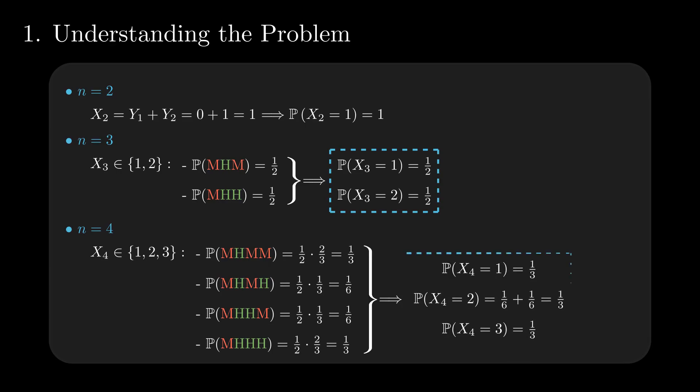Since we have at least one miss, the total number of hits from n tries lies between 1 and n-1. Let's use induction to prove that all values have equal probability, 1 divided by n-1.